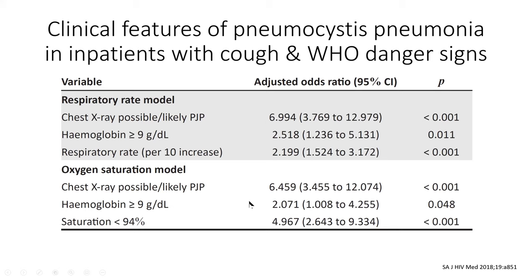With the oxygen saturation model, if the saturation was less than 94%, there was a fivefold increased risk. So if you have a bilateral interstitial pattern and low oxygen saturations, the chances are it's pneumocystis. That was of course pre-COVID, so once your COVID test is negative, there's a very good chance the person has pneumocystis.